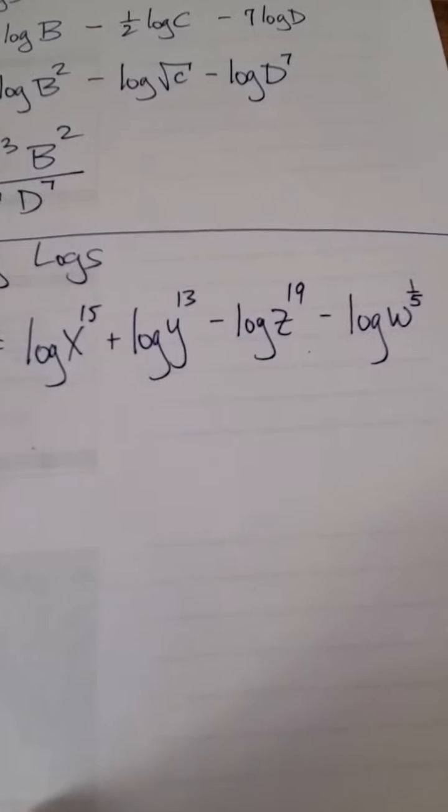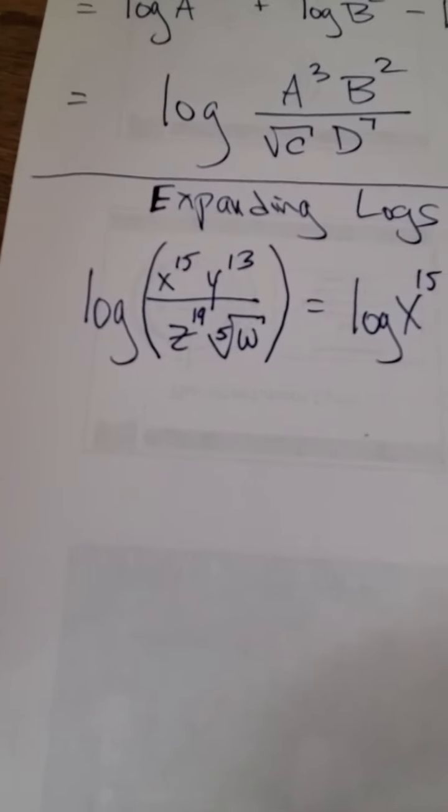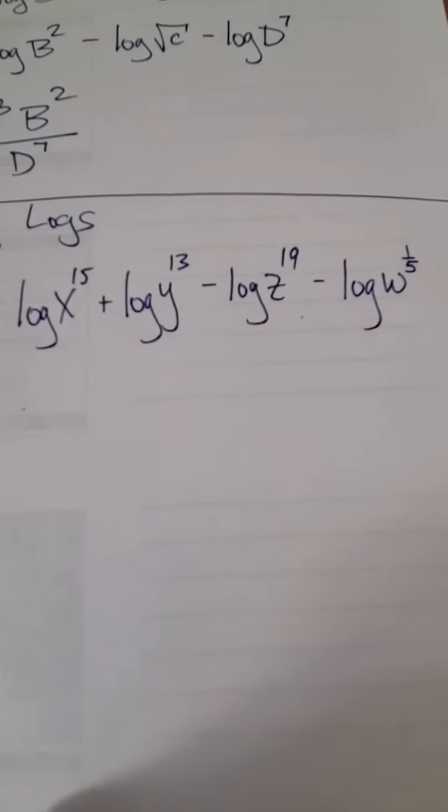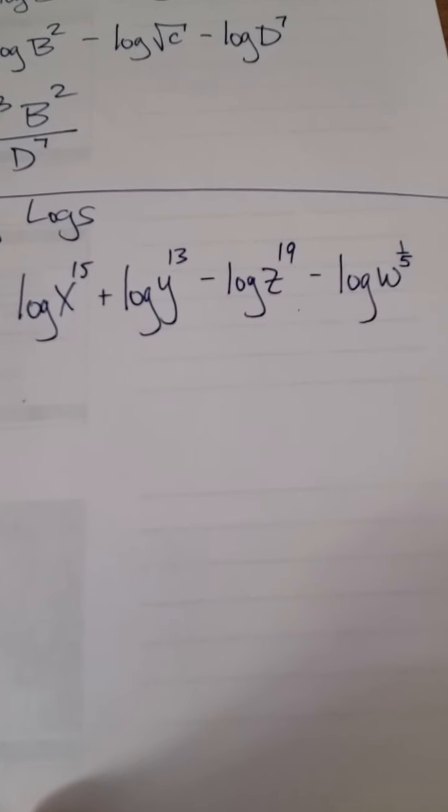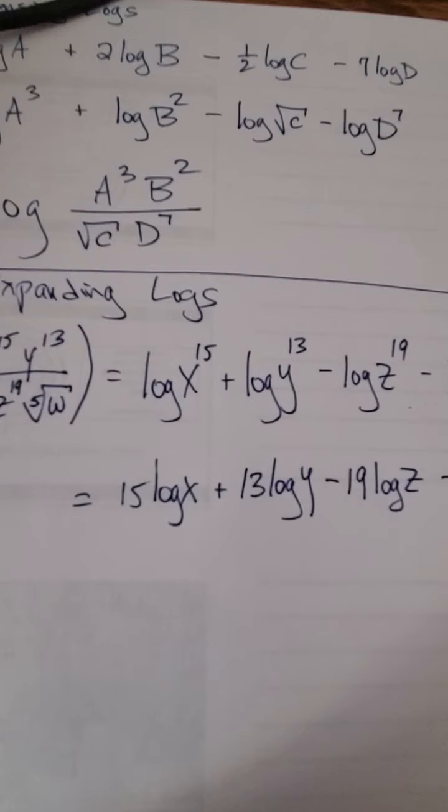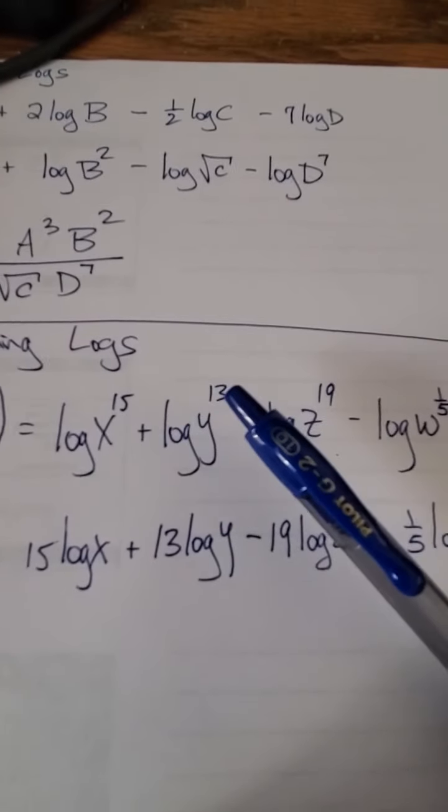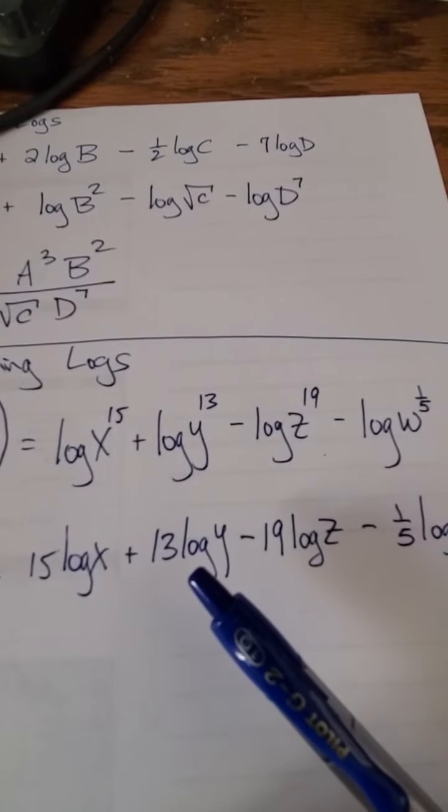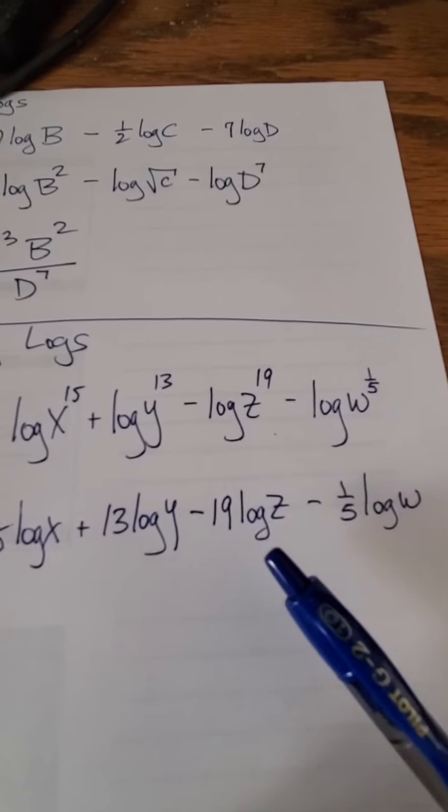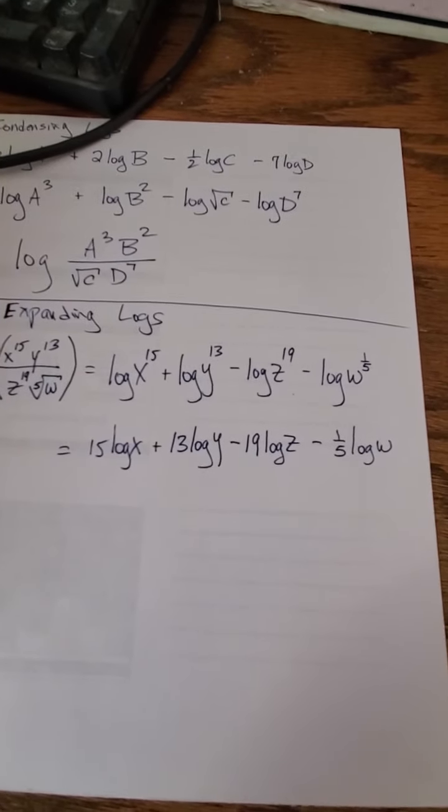Now all I got to do is turn the exponents into coefficients, and that's lickety split like this. So the x to the 15th becomes 15 log x, the y to the 13th becomes 13 log y minus 19 log z minus 1/5th log w, so that's my final answer.